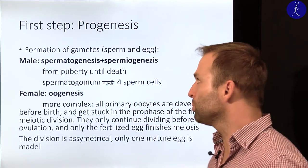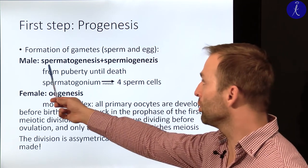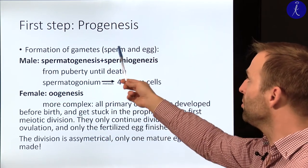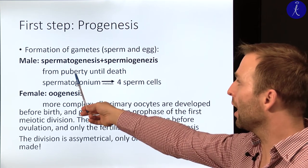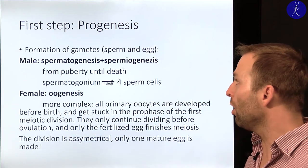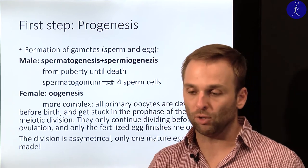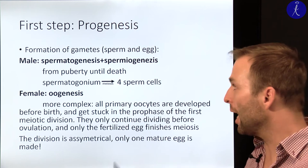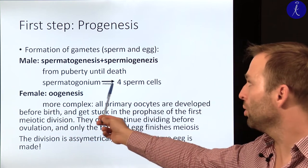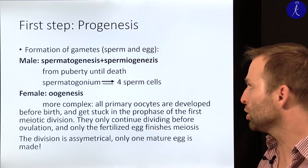In the case of the male, sperm formation has two steps as discussed in previous lectures: spermatogenesis and spermiogenesis. This starts at the age of puberty and continues until death. Even though there is a slow decrease in rate, elderly men can still produce sperm. One spermatogonium is divided by a series of meiotic divisions into four mature sperm cells.